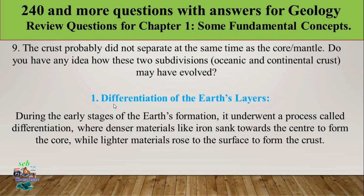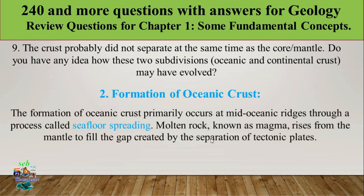The first cause is differentiation of Earth's layers. During early Earth formation, the planet underwent differentiation, where denser materials like iron sank toward the center to form the core, while lighter materials rose to the surface to form the crust. This differentiation is one reason why oceanic and continental crust formed.